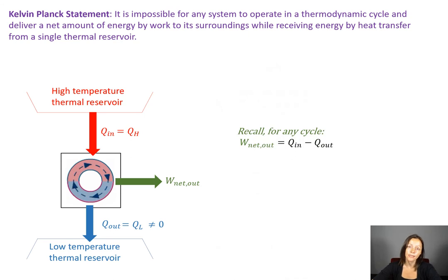And because for any cycle, not just a power cycle, but for any cycle, the work net out is equal to the Q net in, which in this case is Q H minus Q L. What this tells us is that the work net out cannot be equal to Q H because Q L has to be greater than zero.